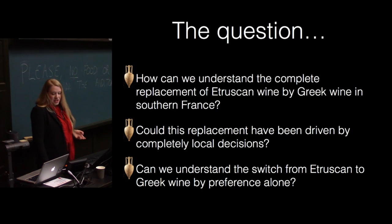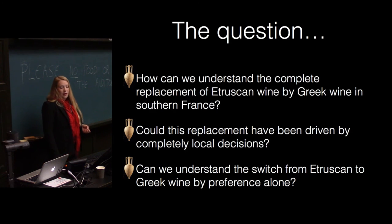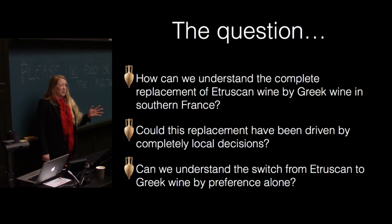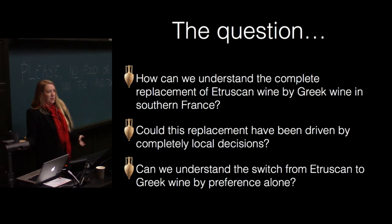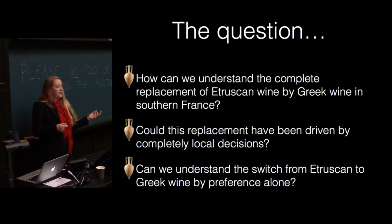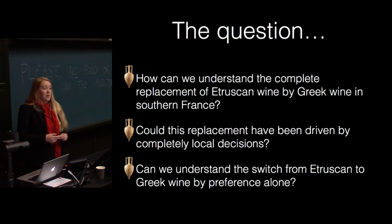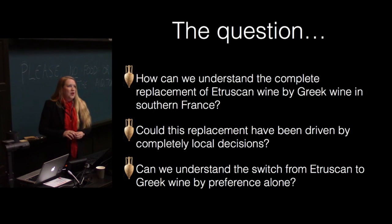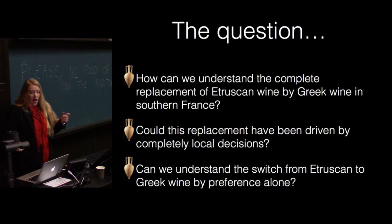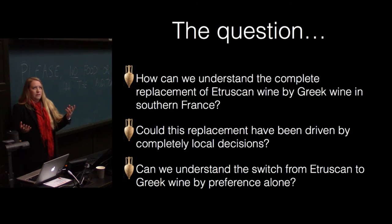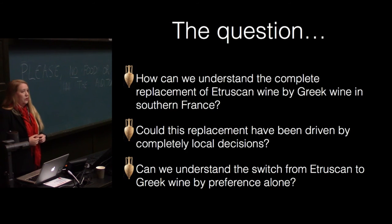My question is: how can we understand the replacement of Etruscan wine by Greek wine in southern France? A very brief history: Etruscans arrive in southern France around 700 BC and bring wine. Everybody loves it — people had been drinking beer before that, and every rich person starts drinking wine. Then all of a sudden Greek wine starts replacing it. Why does this happen? Is it a supply problem on the Etruscan side? Not a lot of evidence for that. Is it some local phenomenon? I want to look at this from a completely local viewpoint.